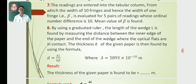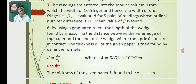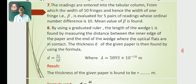The readings are entered into the tabular column, from which the width of 10 fringes — and hence the width of one fringe, beta — is evaluated for five pairs of readings whose ordinal number difference is 10. A mean value of beta is found. By using a graduated ruler, the length of the wedge L is found by measuring the distance between the inner edge of the paper and the end of the wedge where the optical glass plates are in contact.